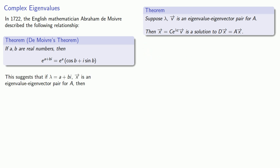And this suggests that if lambda equals a plus b i, x is an eigenvalue-eigenvector pair for a, then c e to power a t cosine b t plus i sine b t x will be a solution to our system of differential equations.